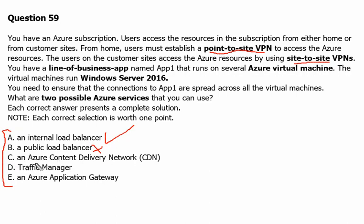Option C is Azure Content Delivery Network, which offers a global solution for rapidly delivering content over the internet — that is also for public-facing applications, not used for internal applications available over VPN. Option D is Azure Traffic Manager, a DNS-based traffic load balancer that allows distributing traffic to public-facing applications across global Azure regions.